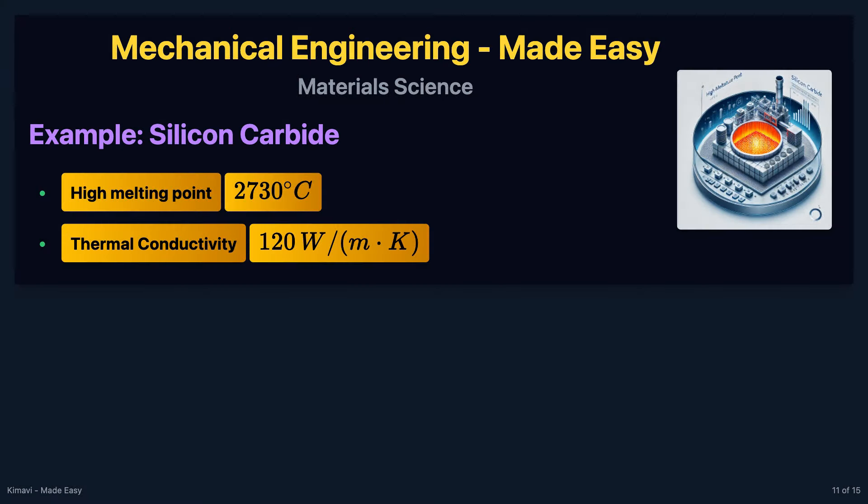Silicon carbide is used in high temperature applications and as an abrasive material. It has a high melting point of about 2730 degrees Celsius, and excellent thermal conductivity of approximately 120 watts per meter Kelvin.